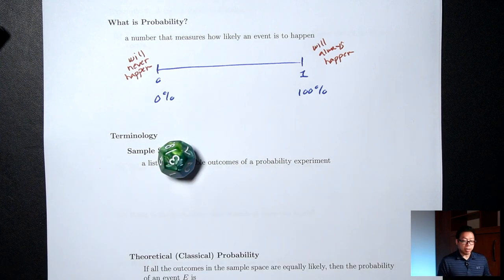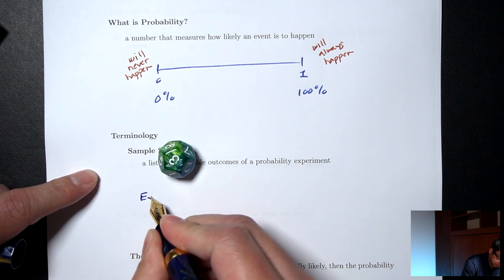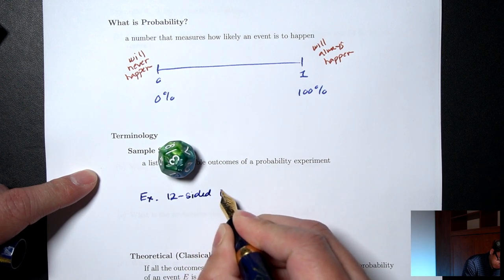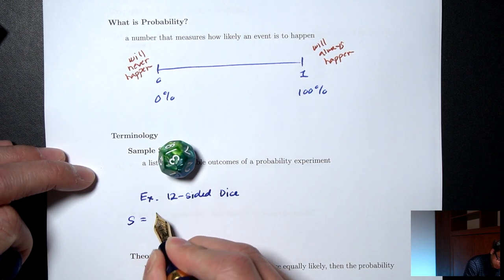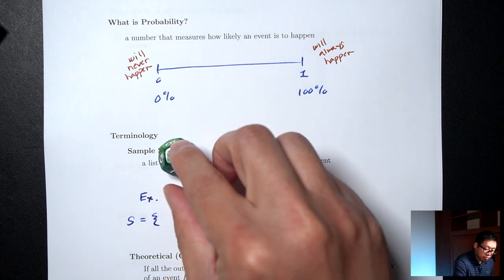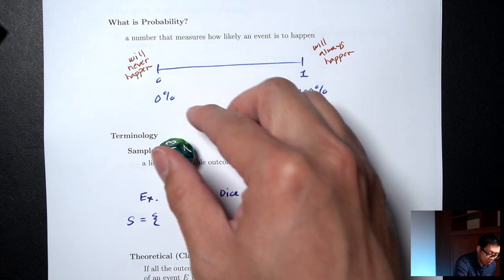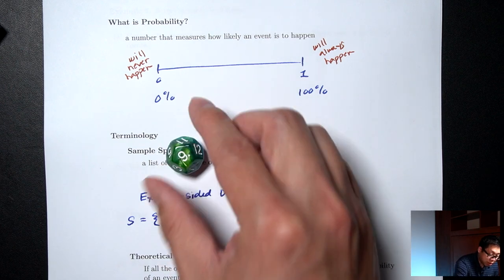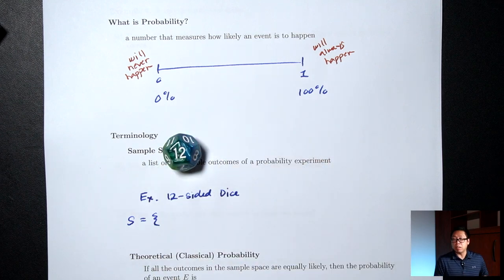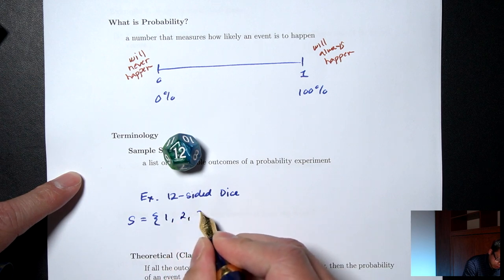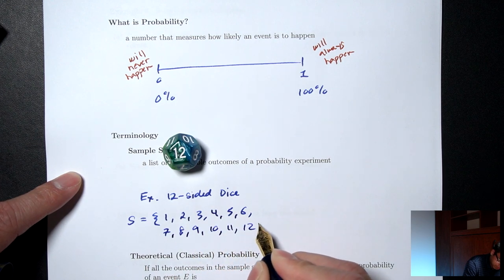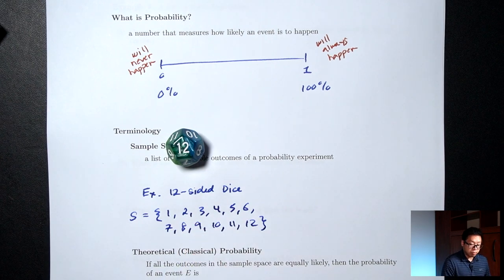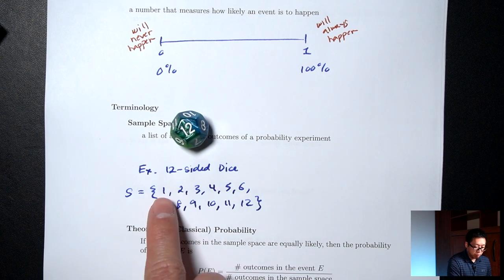In this example of a 12-sided dice, when I roll it I don't know for sure what's going to show up, but I can tell you everything that could happen. That's called a sample space — S for sample space — and we just list out everything that could happen. So when I roll this dice, I could get a 1, 2, 3, and all the way up to 12. That's the sample space for this 12-sided dice: everything that could happen, 1 all the way up to 12.